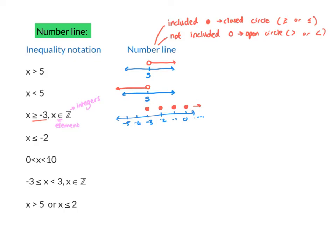X is less than or equal to negative 2 — I just need negative 2 as my reference. Since it's less than or equal to, I do a closed circle at negative 2, and the values for x go to the left. The next one: x is between 0 and 10, meaning x is greater than 0 and x is smaller than 10. On my number line I have two values, 0 and 10. It does not include 0, so I do an open circle at 0; it does not include 10, so I do an open circle at 10, then join them to show x is between 0 and 10.